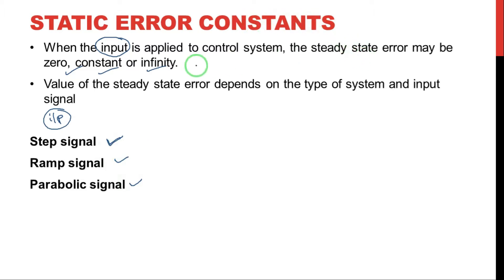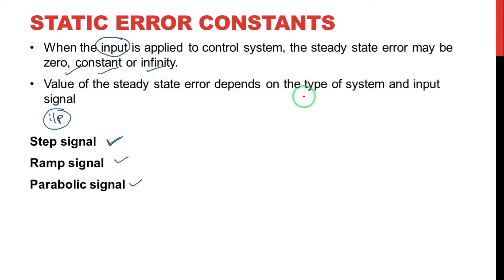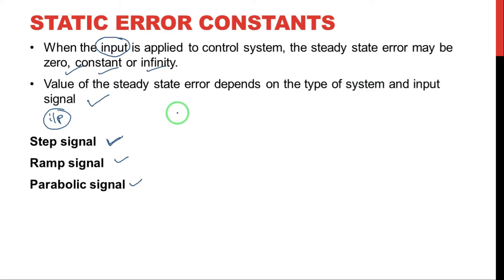This is point number one. The second important point: the value of the steady state error depends upon the type of system and the input signal. In the previous problem, the value 1 by 60 depends on these two parameters — the type of the system and the input signal. The steady state error being zero, constant, or infinity depends mainly on these two parameters.